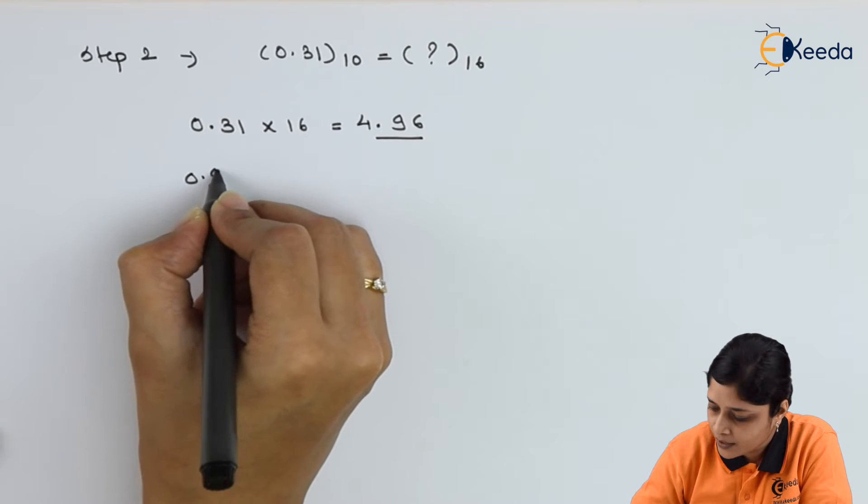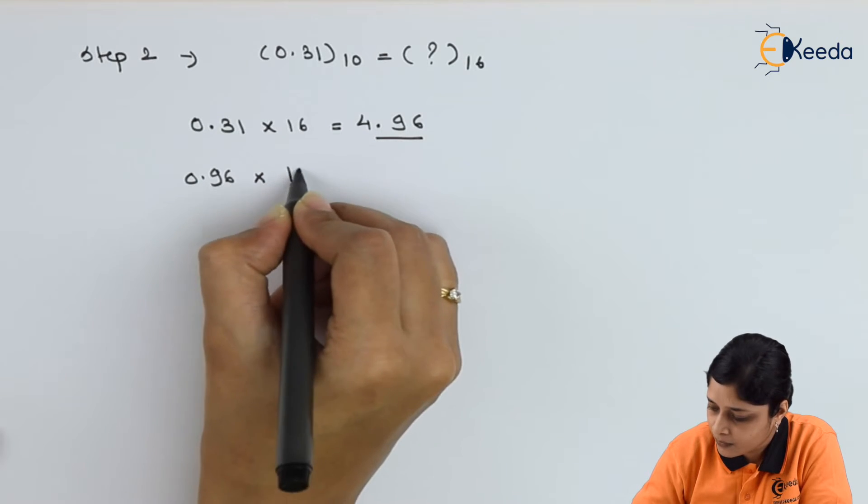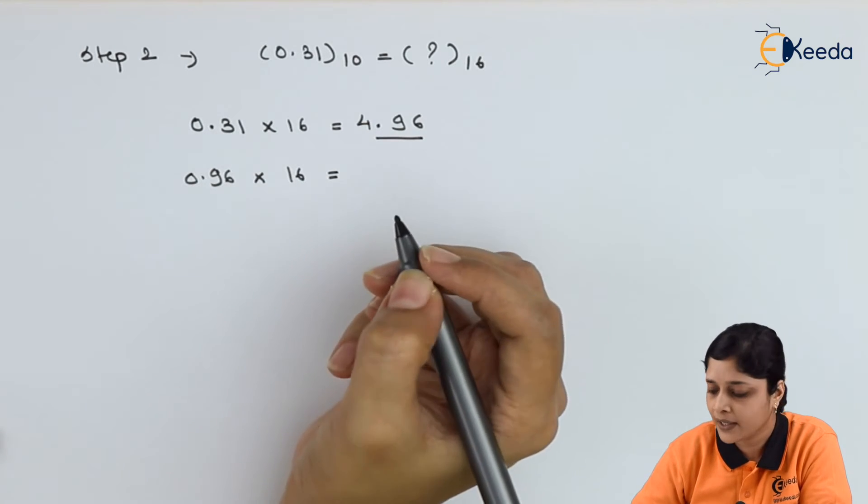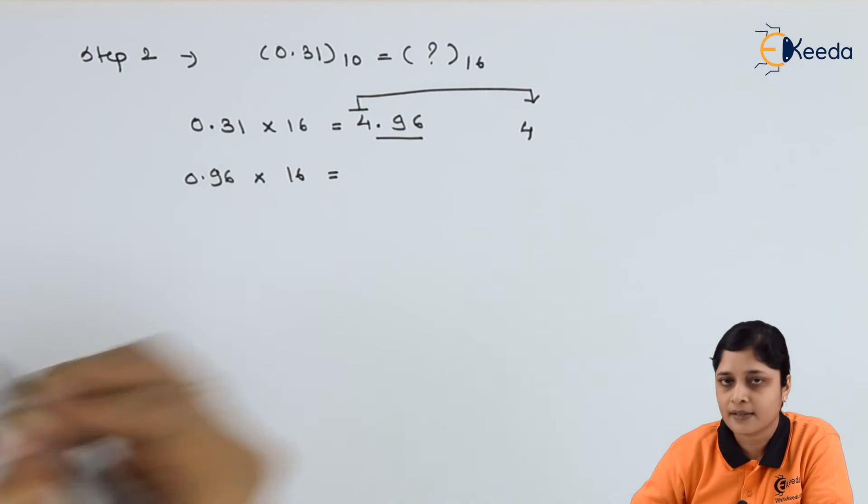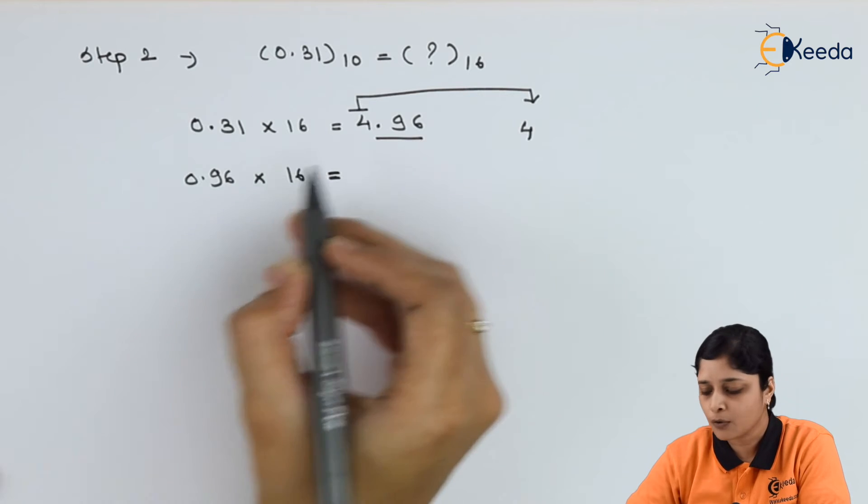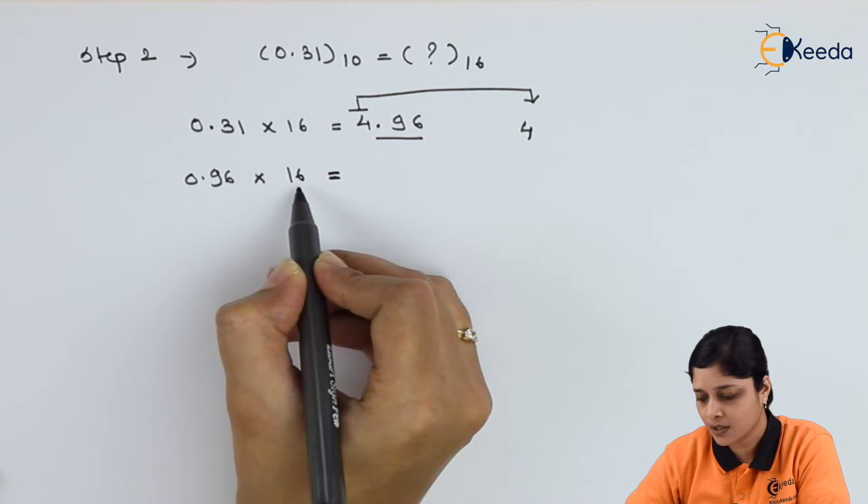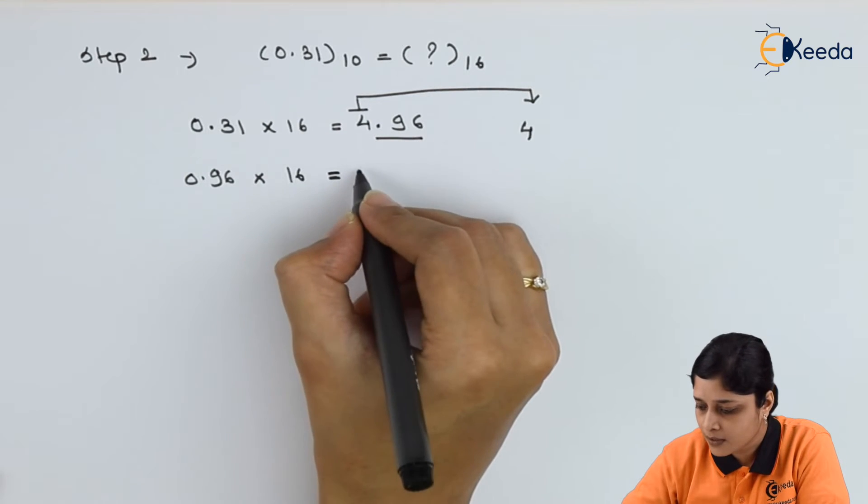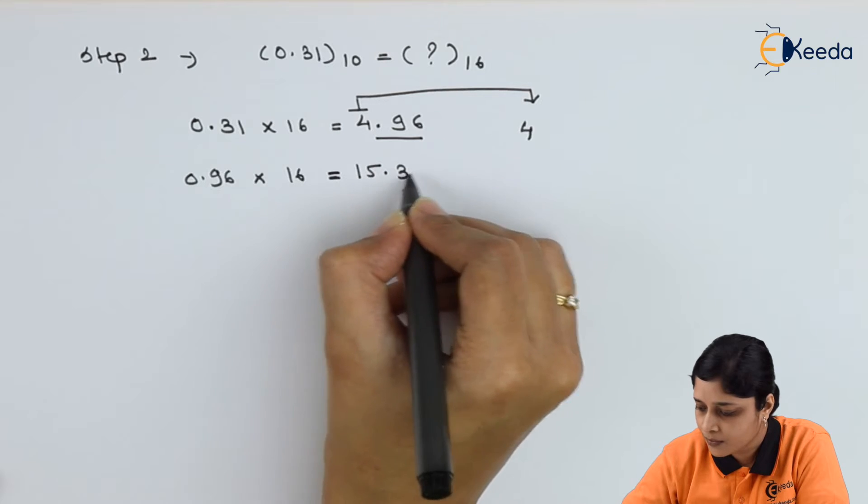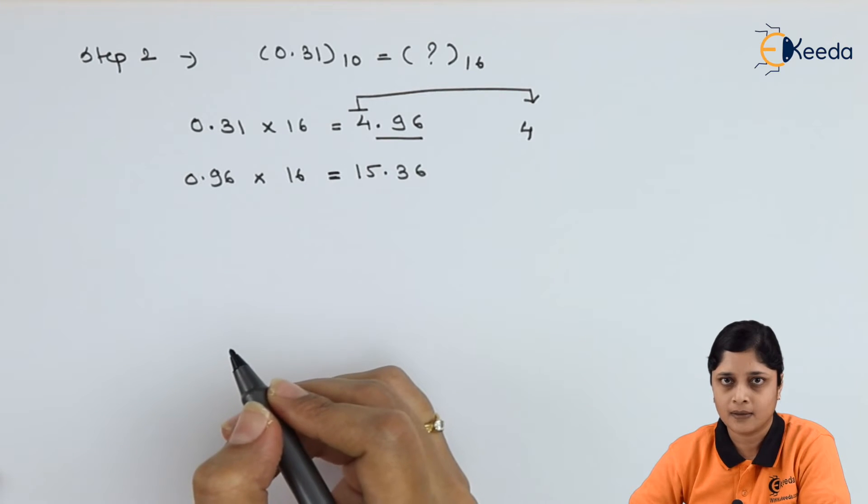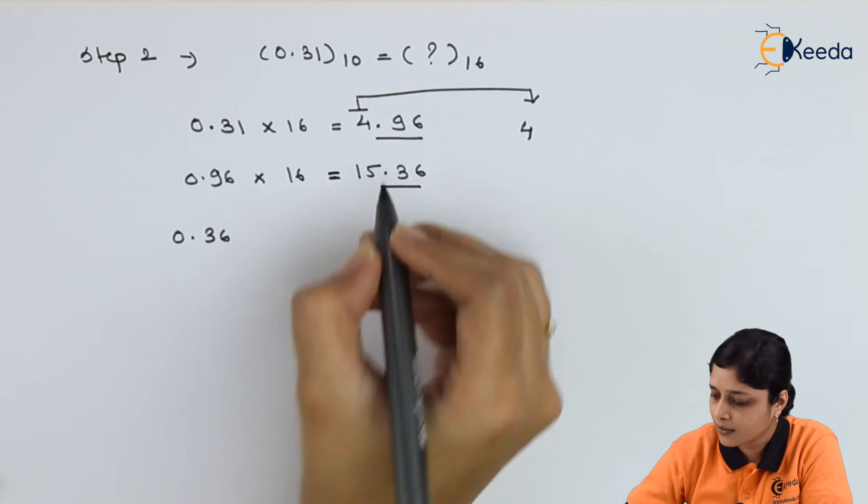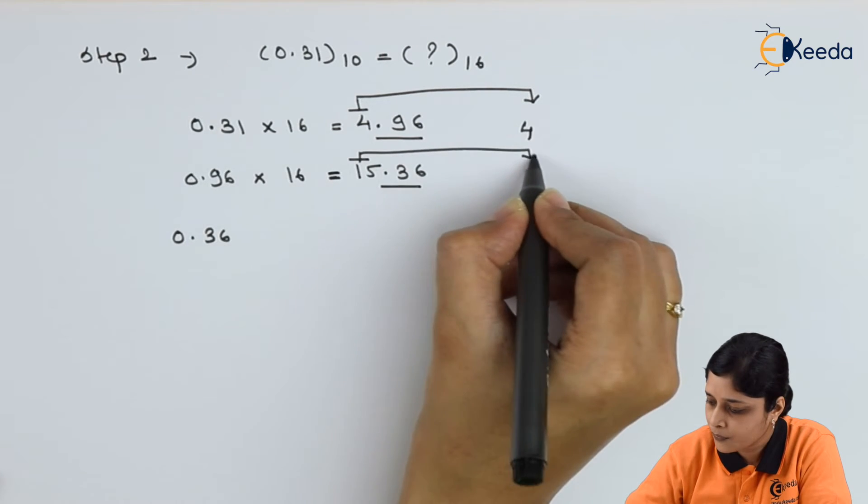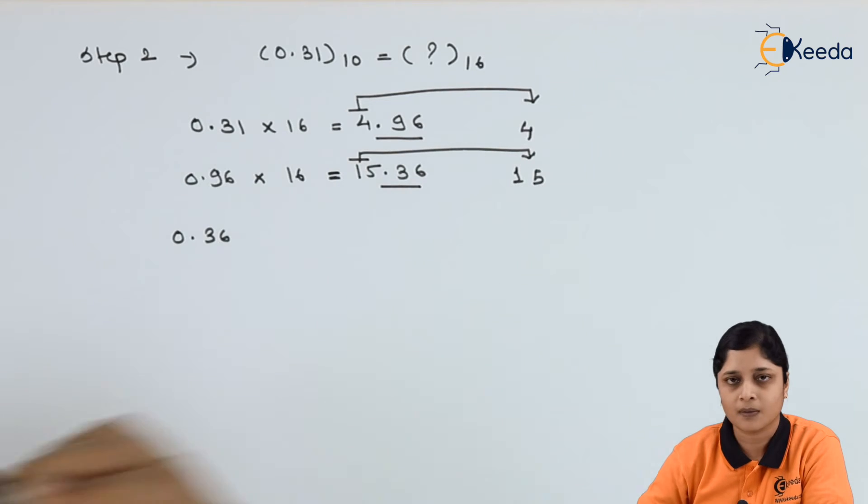Take 0.96 into 16. Your answer is 15.36. Now take 0.36 here and 15 you have to put here. Again do multiplication with 16.